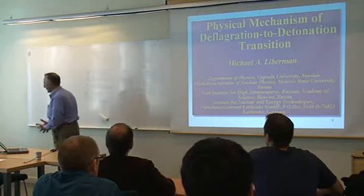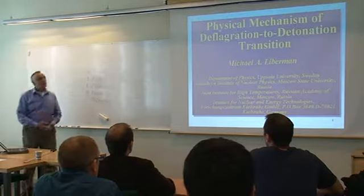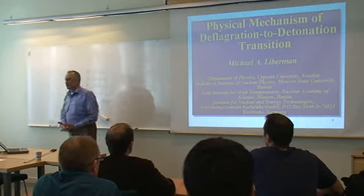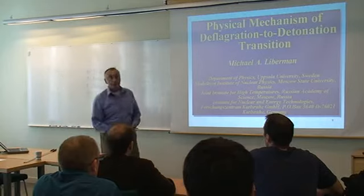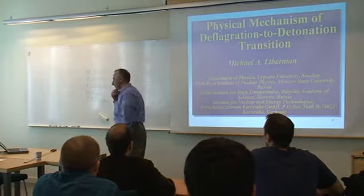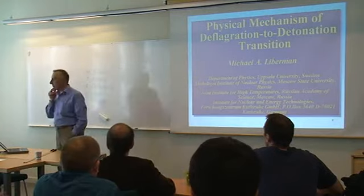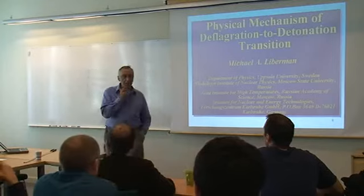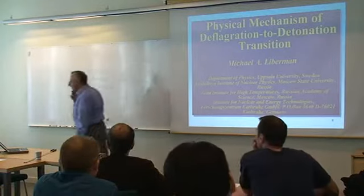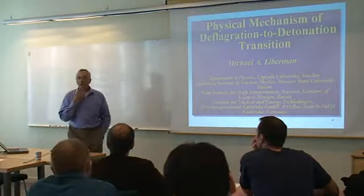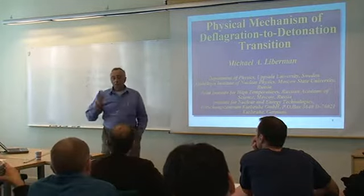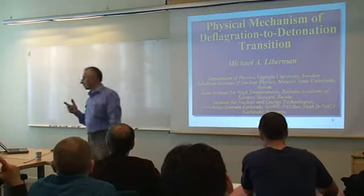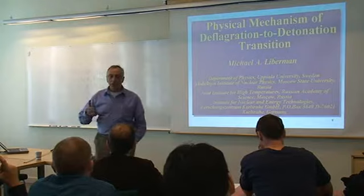What I shall talk about today is the origin and physical mechanism of deflagration to detonation transition. Very important here is to use detailed chemistry, because using one-step chemical models leads to serious mistakes and totally incorrect conclusions about the mechanism of transition. This is very important for understanding the interaction of turbulence with the flame.